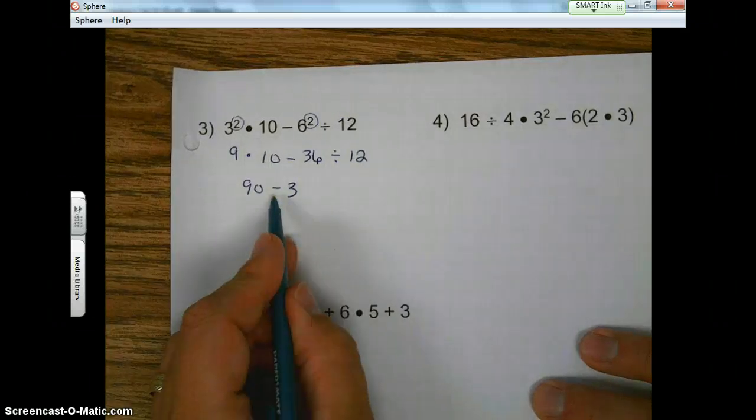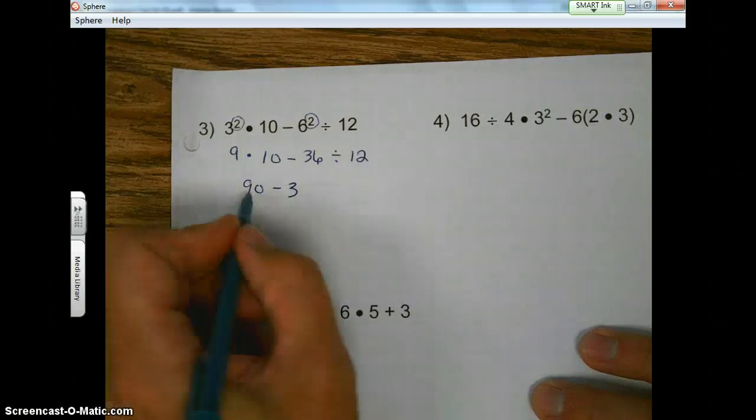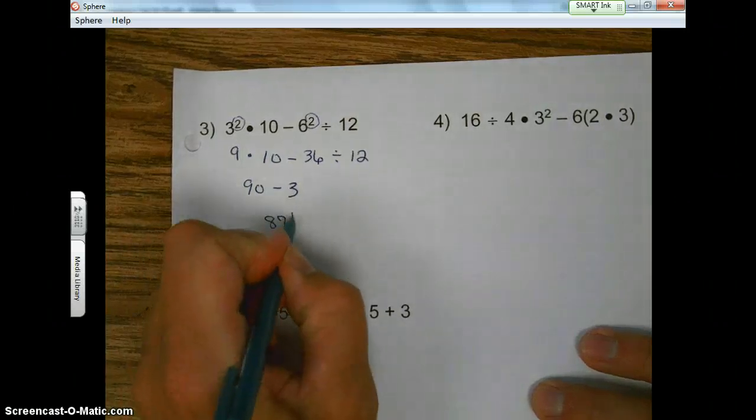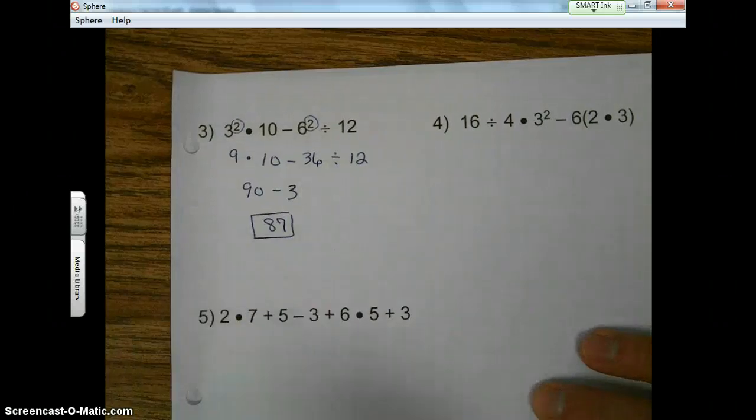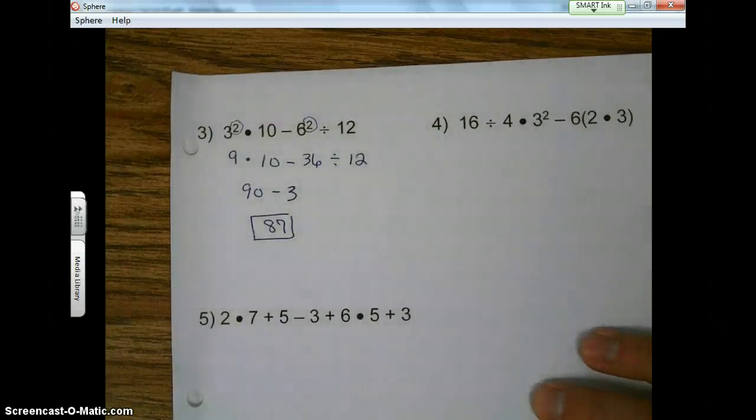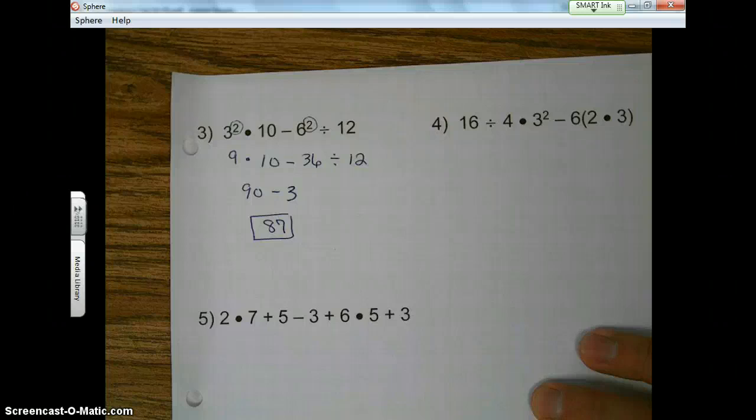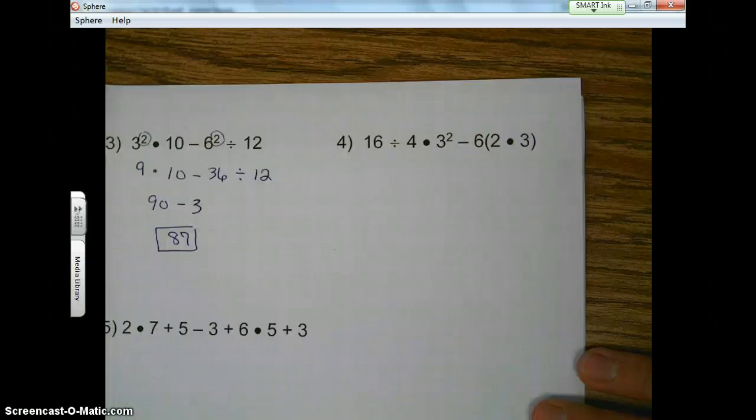Finally, please excuse my dear Aunt Sally, adding and subtracting left to right. So subtract, we get 87. Okay? Remember, we're using the order of operations when simplifying, okay? When simplifying an expression.